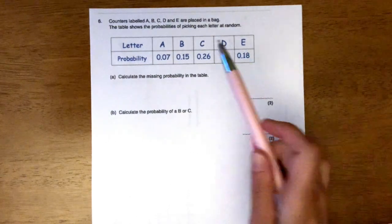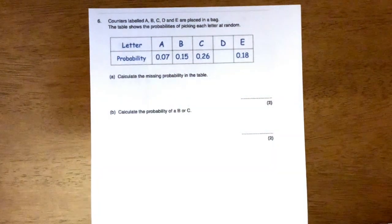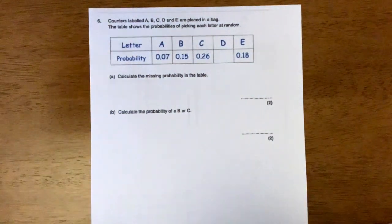So it says if there are counters labelled A, B, C and D and they're all in a bag, all of those together would make the probability of 1.